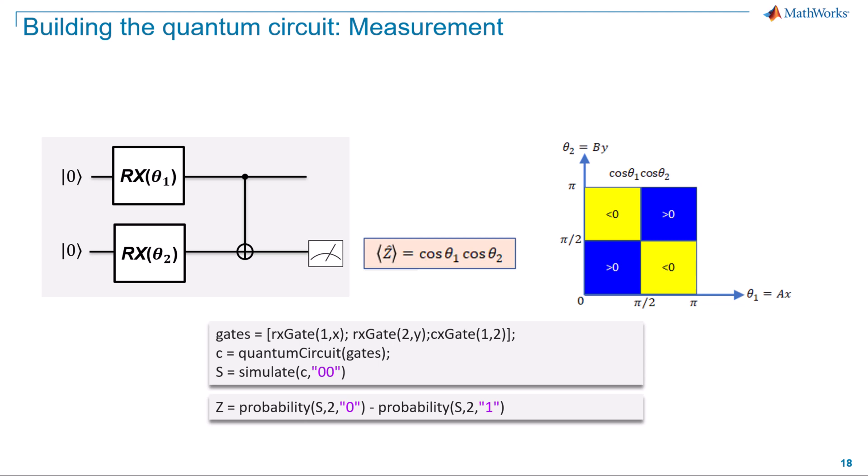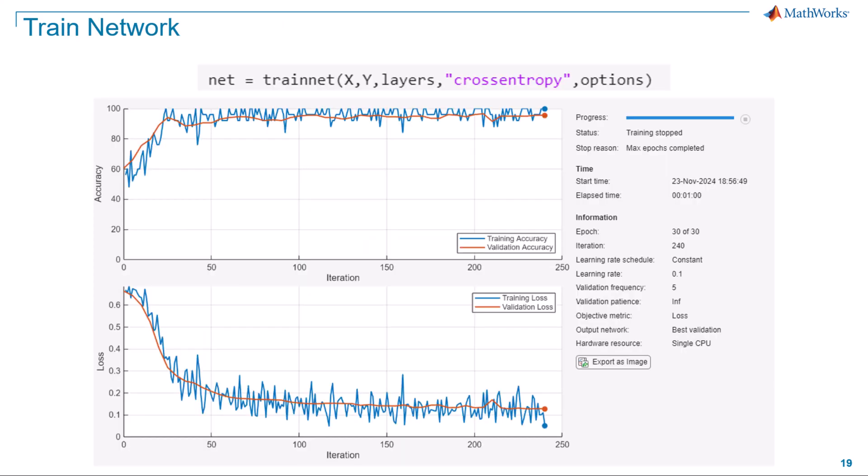You then use the condition expectation of Z equal to 0 to determine the classification boundaries of the XOR problem. So a single measurement on this quantum circuit allows us to label a pair of XY numbers as yellow or blue. And that is basically what we wanted to achieve. With this setup, your trained neural network with quantum layer is now ready.